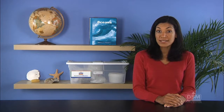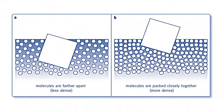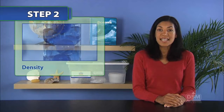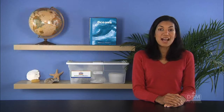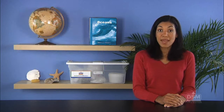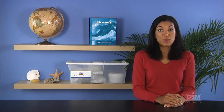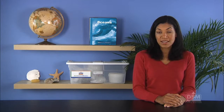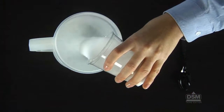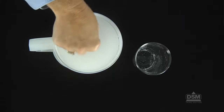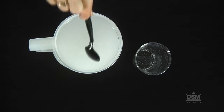Help students understand that whenever dissolved salts are present in water, they fill in the spaces between the molecules of water, as they are in the ocean. Define density for the class as the amount of matter in a given volume. Guide students to understand that matter is anything that takes up space, and the more matter in a given volume of a substance, the denser that substance will be. Further explain that the presence of dissolved salt changes the density of water — the more salt dissolved in water, the denser the water becomes.